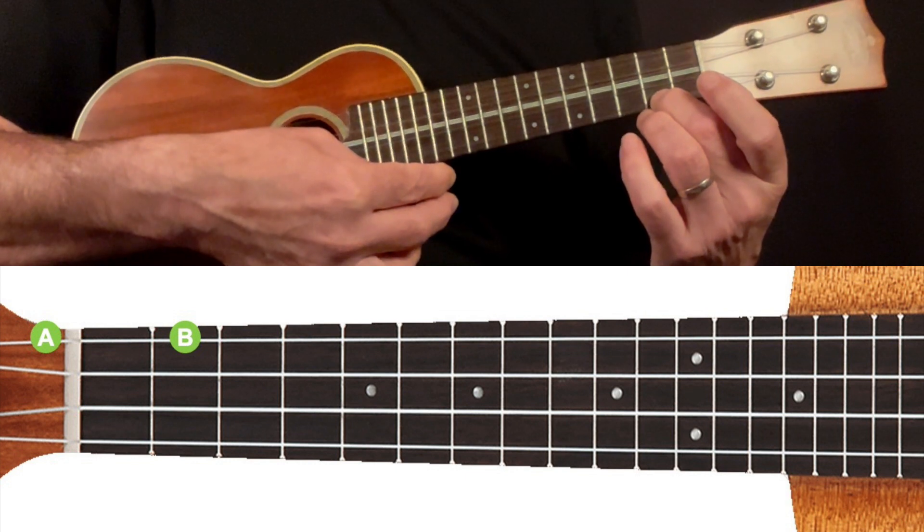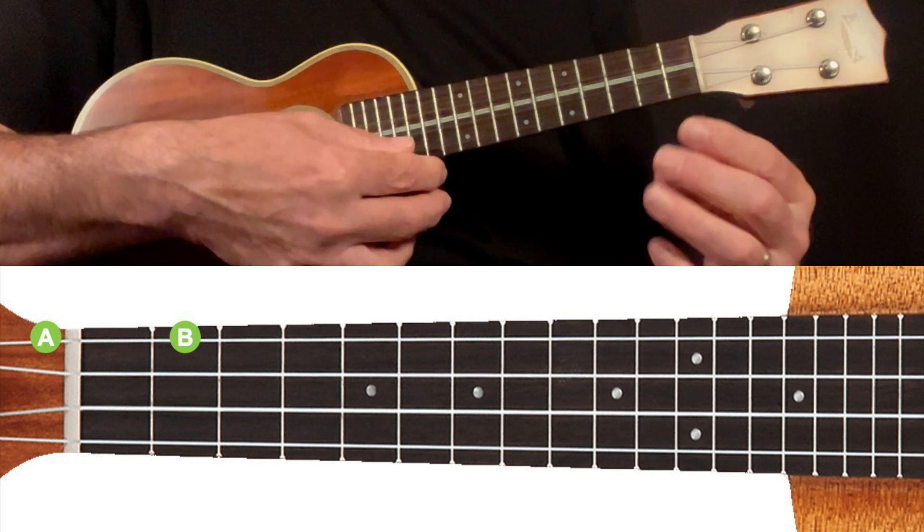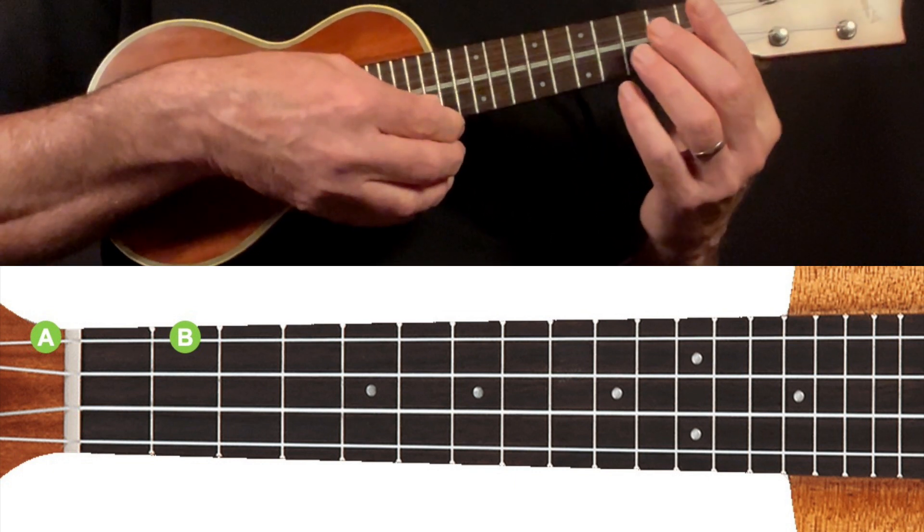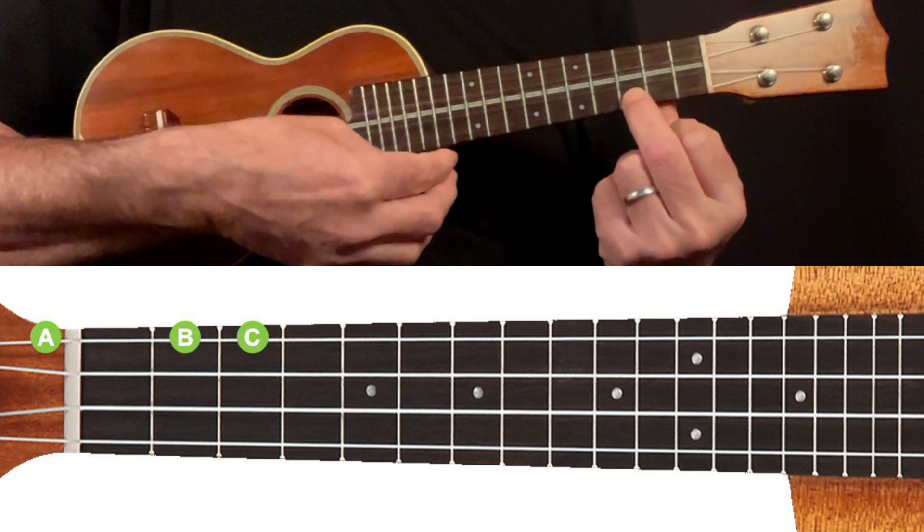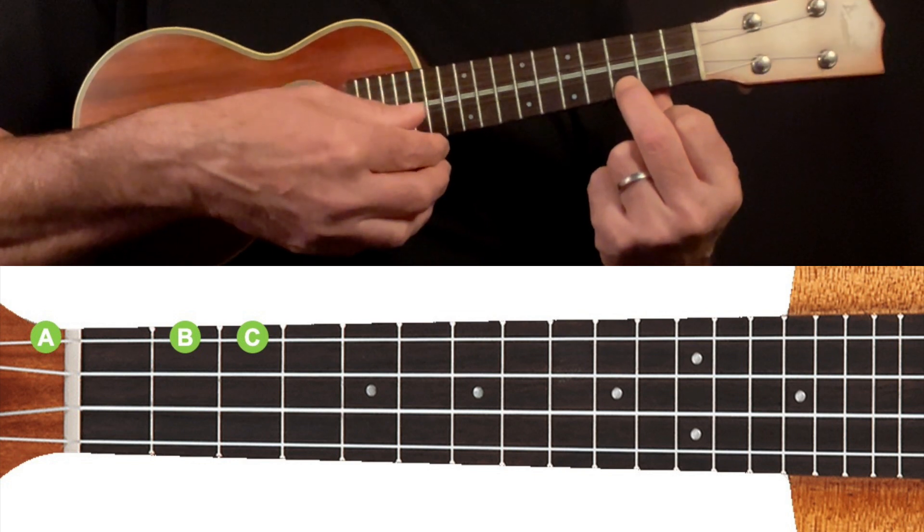You've probably also noticed that I didn't play the note at the first fret. Don't worry about that for now, I will explain that once we've looked at all of the natural notes first. If we then fret the same string again, this time at the third fret, we have a C note.